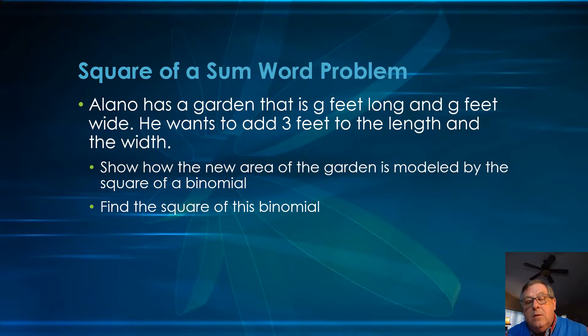We want to find the area of a garden that initially is g feet long and g feet wide, which means it's going to be a square. But the area of a square is found by the length times the width. But he wants to add three feet to both the length and the width.